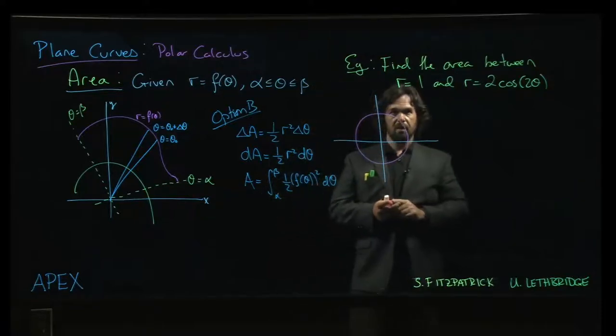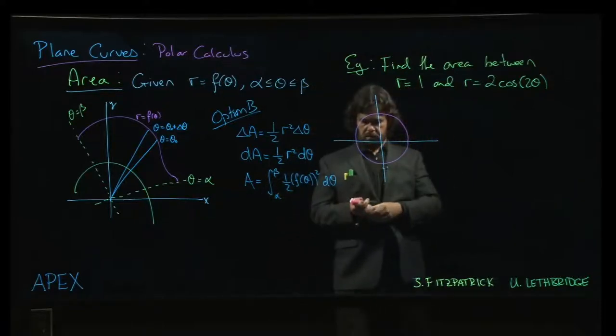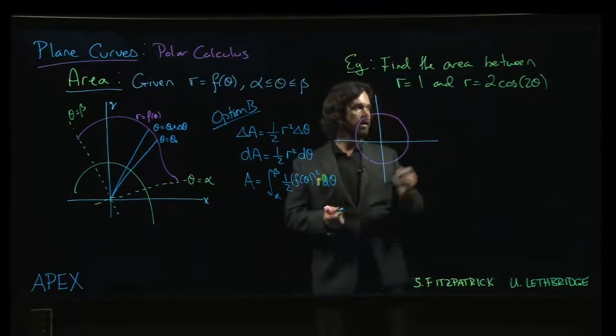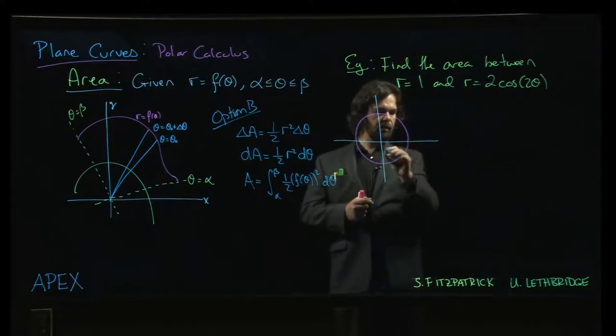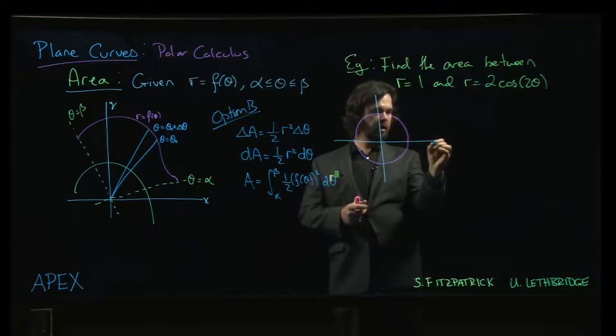What do we actually mean? So the first curve, r equals 1, unit circle. Second curve is a four-leaf rose and we start two units out because of the 2 in front of the 2 cos 2 theta there.